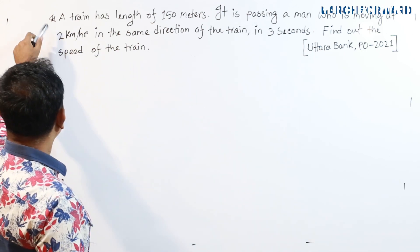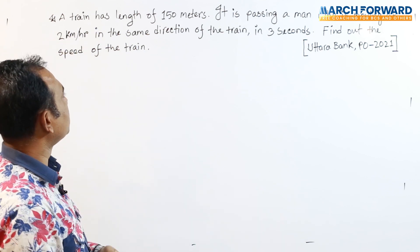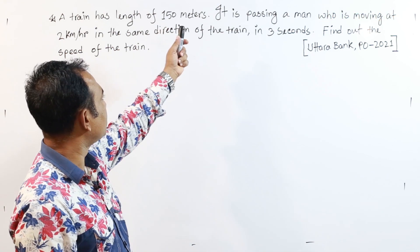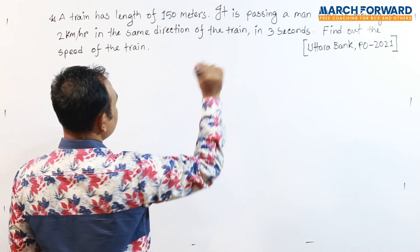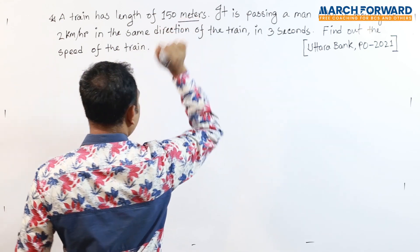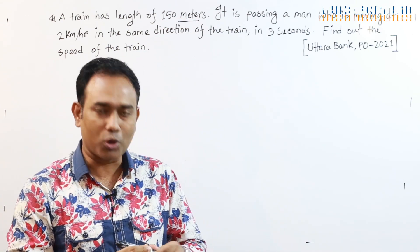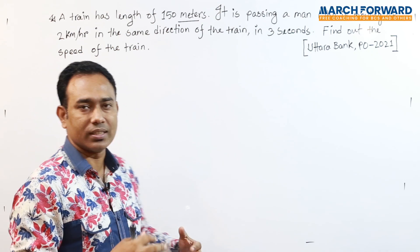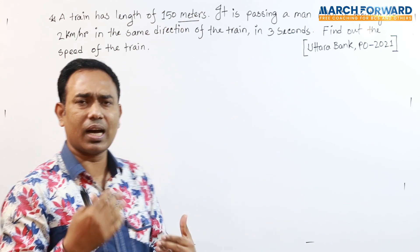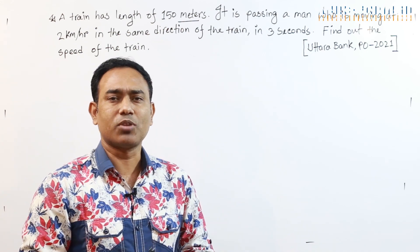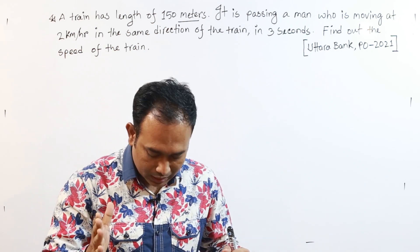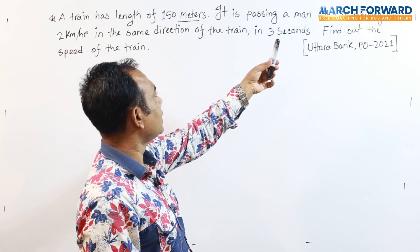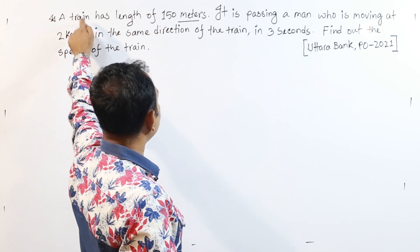That means an active trainer is 150 meters. It is passing a man — it is 20 seconds pass.